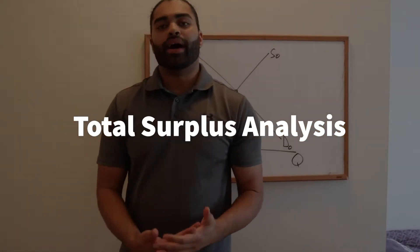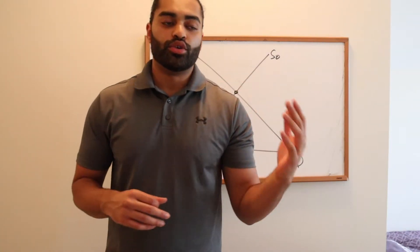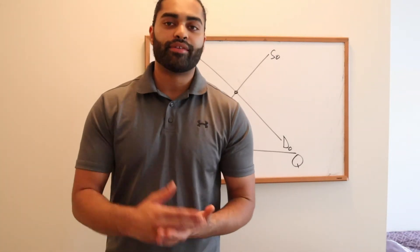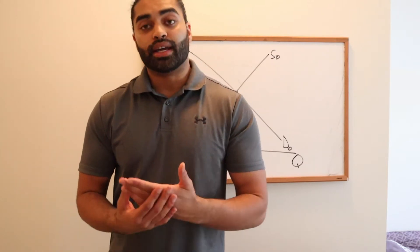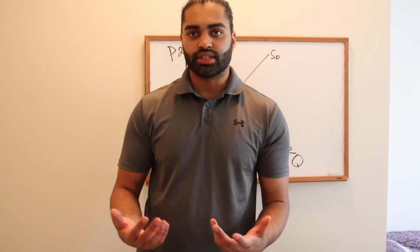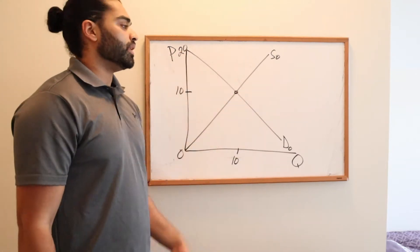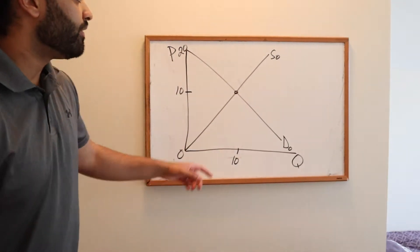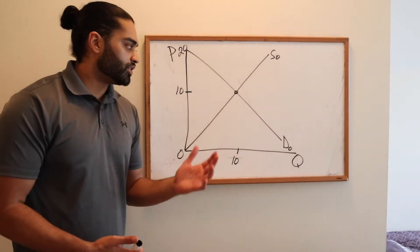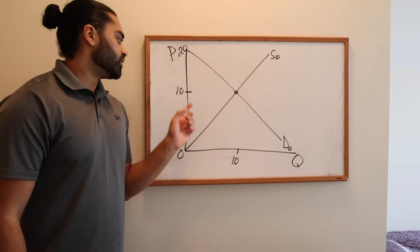Welcome back everyone. Today we're going to be talking about market efficiency — basically where do we maximize our efficiency and who's involved. We'll look at consumers, we'll look at producers, and we'll see what happens when we impose a tax. So we have our model: price, quantity, demand, and supply. The most efficient point on this graph is where both curves intersect — we call this equilibrium.